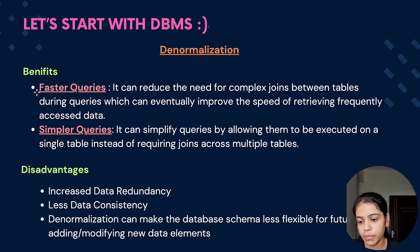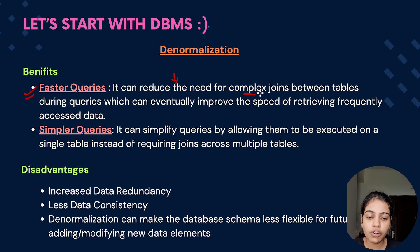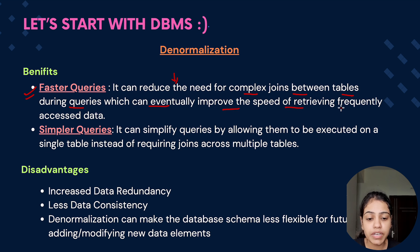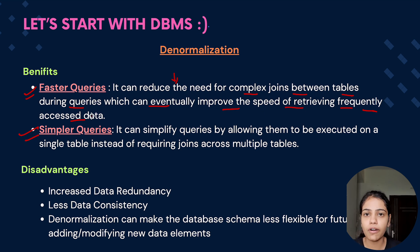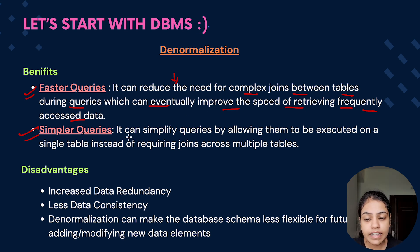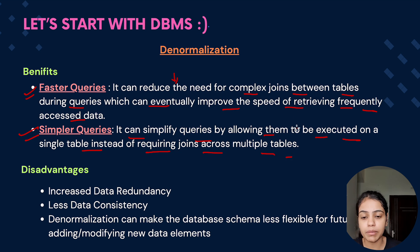So what are the benefits of denormalization? First is faster queries — it reduces the need for complex joins between tables during queries, which improves the speed of retrieving data. The second benefit is simpler queries, because there are no joins involved and we are not querying three or four tables, so the queries are much less complex.